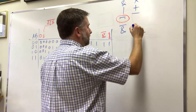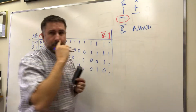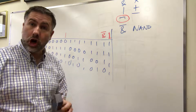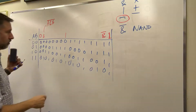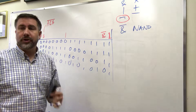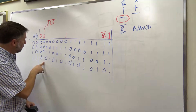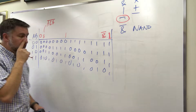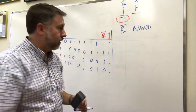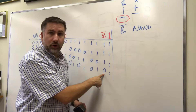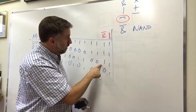We call this NAND. It's a special function which is NOT the AND. So if the AND of two variables is true only when they're both true — like this one here, true only when they're both true — the NAND of two variables is false only when they're both true, and it's true every other way.